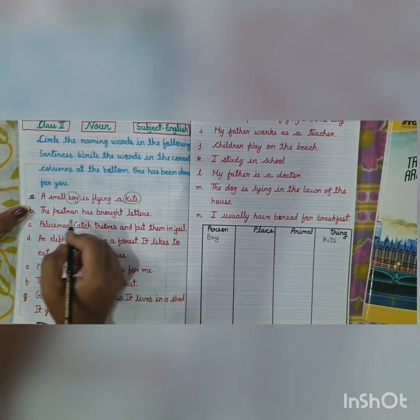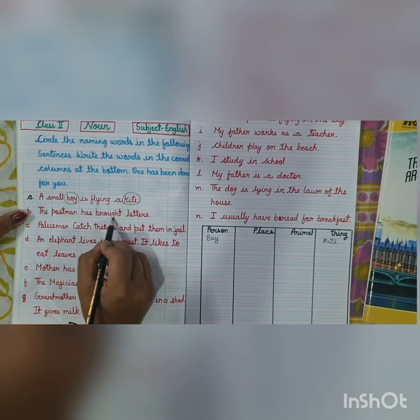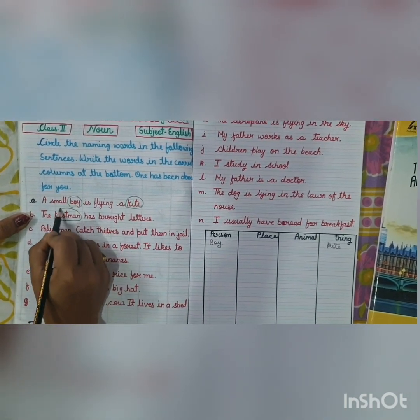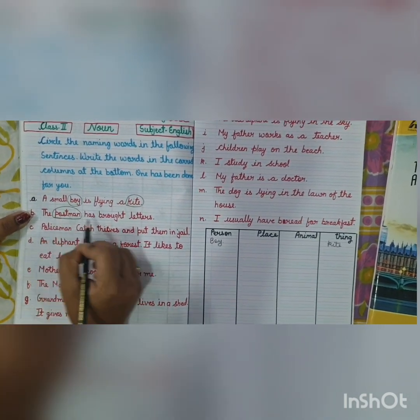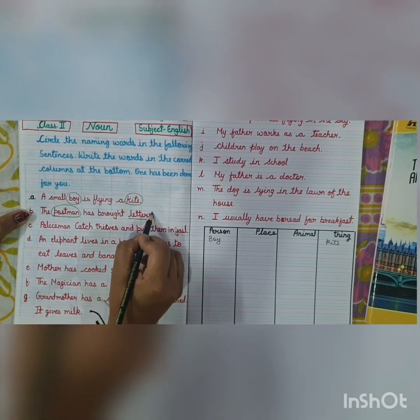The second sentence is: The postman has brought letters. Postman is a person, and letters are things.